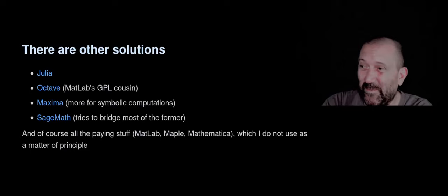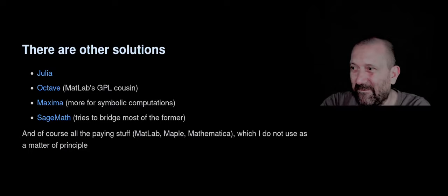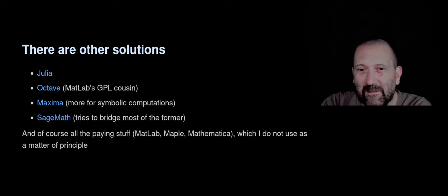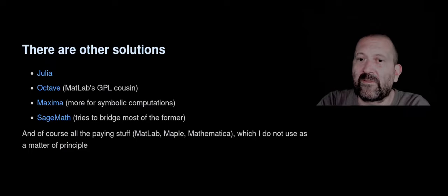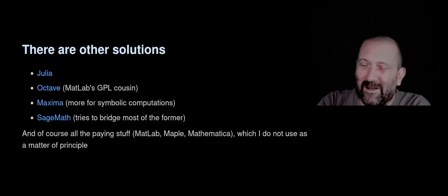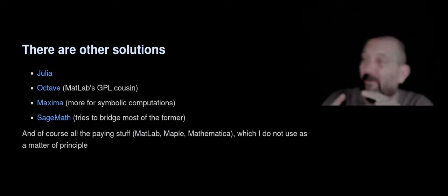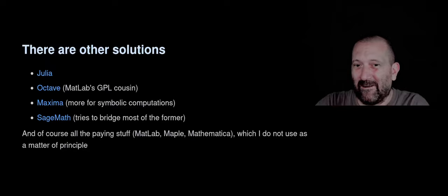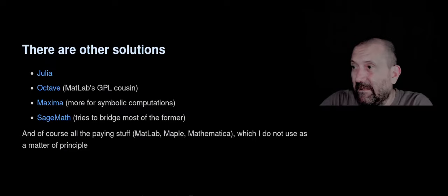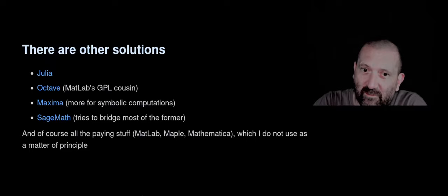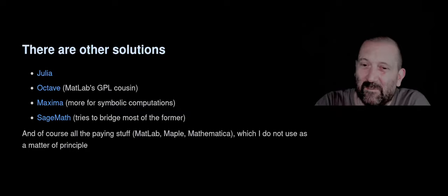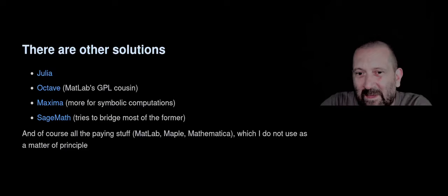There are other solutions. One I should have mentioned — originally developed by the lab where I did my PhD — is Scilab, a scientific computation language. There's also Julia, Octave (which is MATLAB's open source cousin), Maxima for symbolic computation, and SageMath, which tries to bridge all of the above — Julia, Python, R, Maxima, Octave, etc. Personally, I only use open source programs, which is why I use R or Python rather than MATLAB.